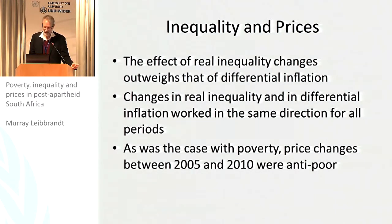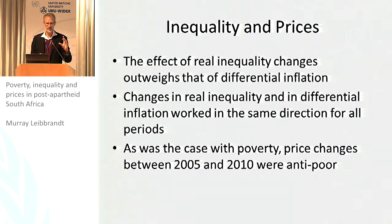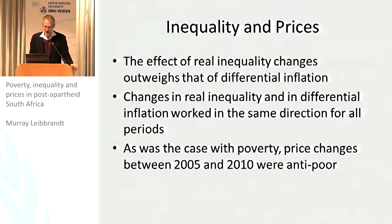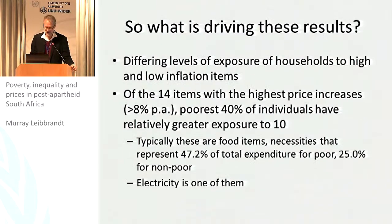But it does turn out, even here, that the price changes were anti-poor. So two pieces of evidence — one a poverty decomposition, one an inequality decomposition — show that changes in prices between 2005 and 2010 were not helpful: they were not real increases in welfare. In fact, they detracted from the straight expenditure effect. So what's driving these results?